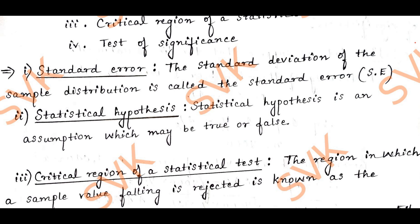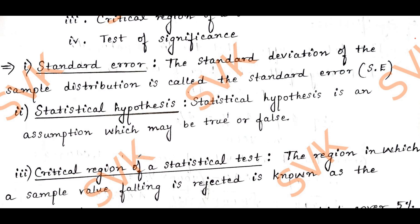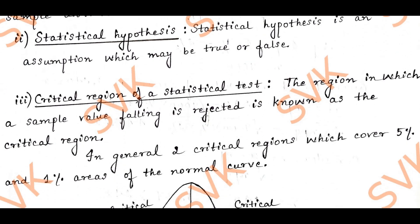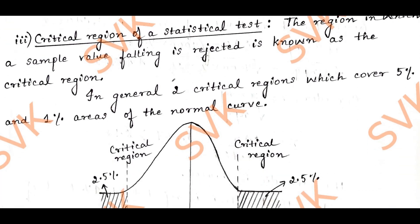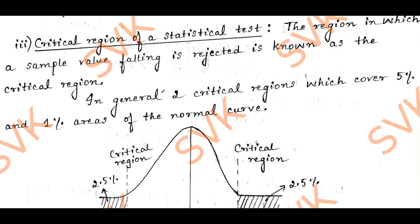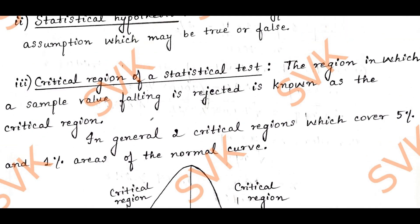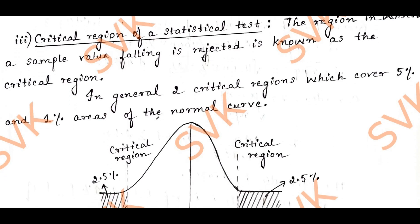If we assume that a hypothesis may be true or false, such a hypothesis is called a statistical hypothesis. When we come to critical region, I have explained it in the previous video, so you can refer to that definition. Note down the definition properly and write it in your examination.